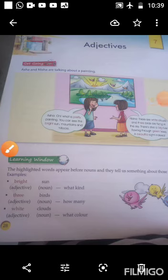Adjectives. An adjective is a word that provides more information about a noun — like what kind, how many, what color, etc.